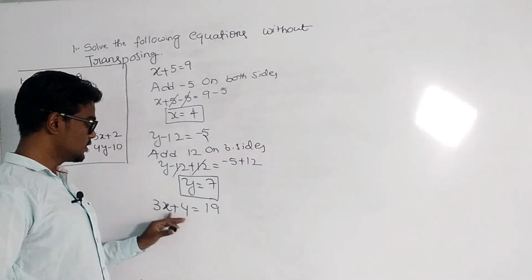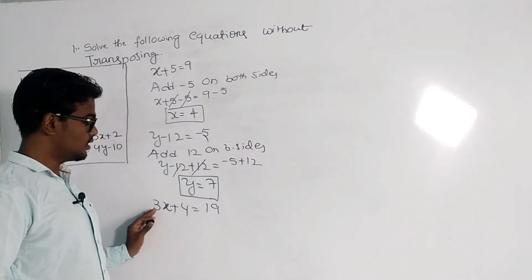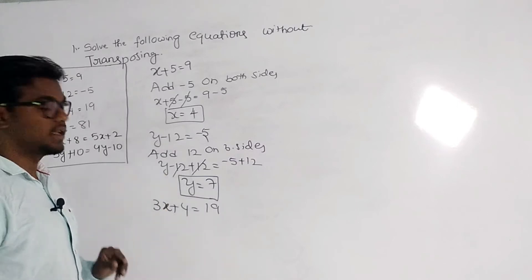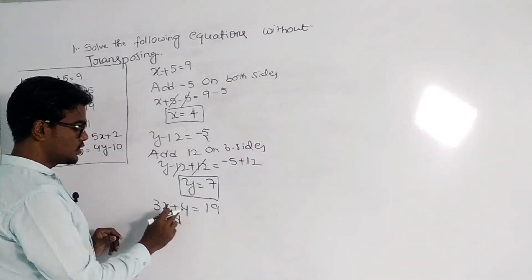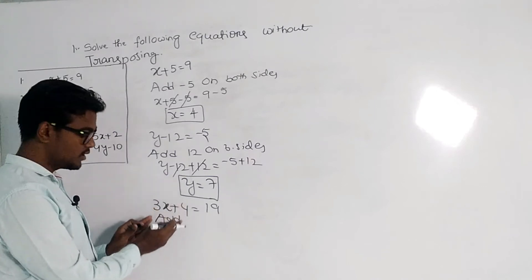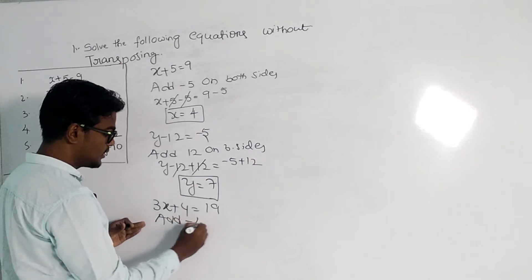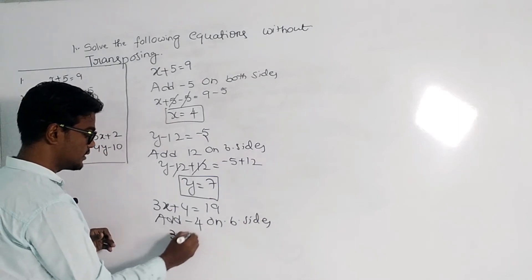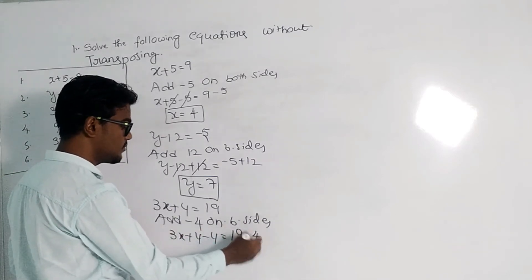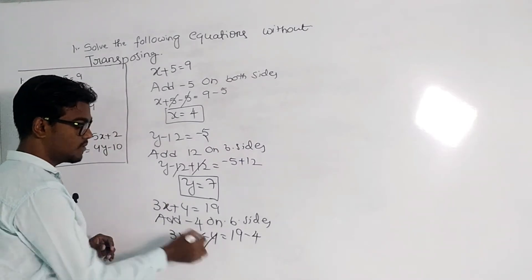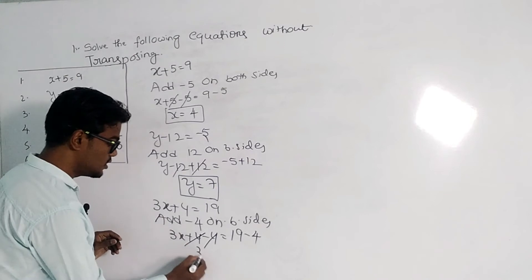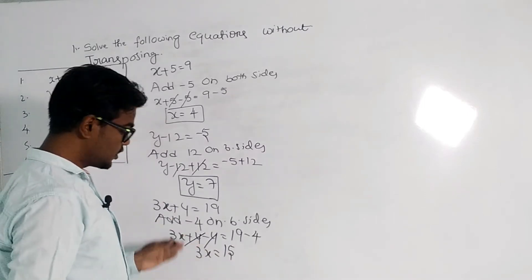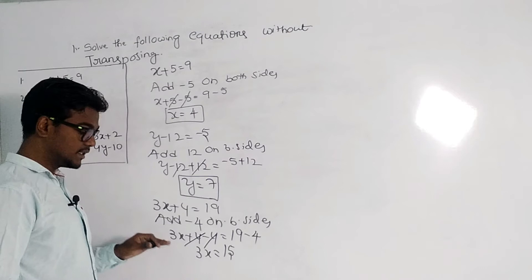The next equation is 3x plus 4 equals 19. Here the variable x is multiplied by 3 and plus 4 is also present. First, we remove the plus 4. If plus 4 is there, we add minus 4 on both sides. If it were minus 4, we would add plus 4. So we add minus 4 on both sides: 3x plus 4 minus 4 equals 19 minus 4. The plus 4 and minus 4 cancel, giving us 3x equals 15.